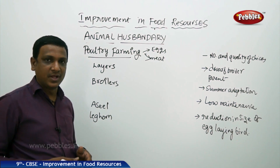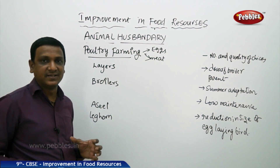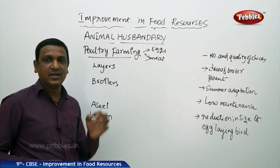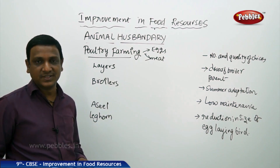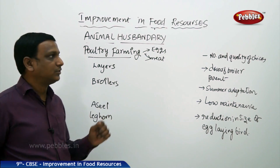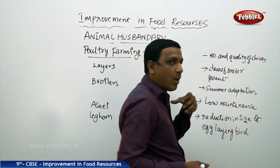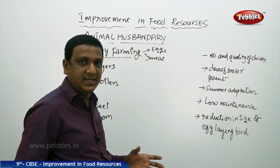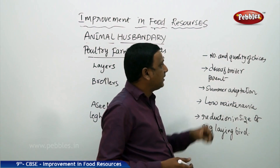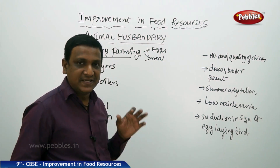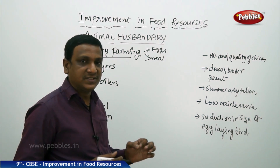Hybrid varieties are selected for specific qualities that are commercially helpful for farmers to get profits. What kind of qualities are expected in a variety chosen for poultry farming? Number and quality of chicks must be good. If it is a layer, the number and quality of chicks must be good.